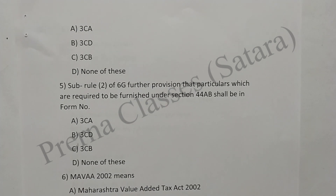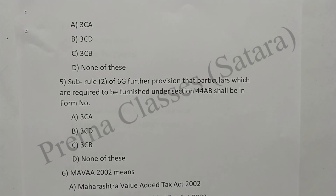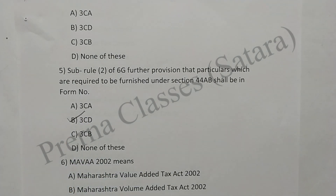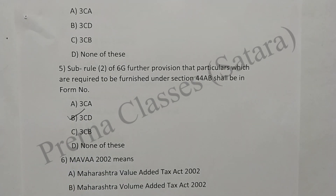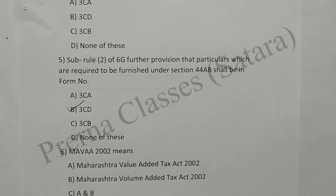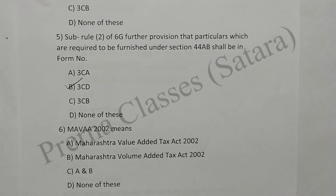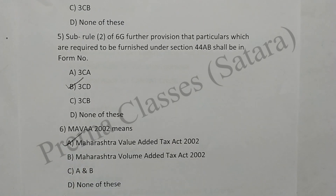Sub-rule 2 of rule 6G further provides that particulars which are required to be furnished under section 44AB shall be in form number 3CD. Option B is correct. Question 6: MVAT Act 2002 means Maharashtra Value Added Tax Act 2002. Option A is correct.